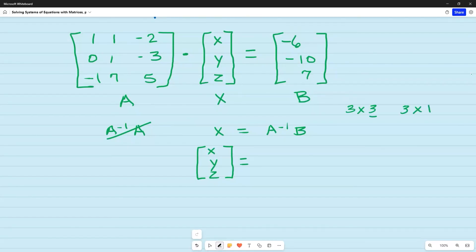So in order to multiply, the middle numbers have to be exactly the same, which they are. And so I know my final answer is going to be what's left over, which is a 3 by 1. So let's go back to the calculator.